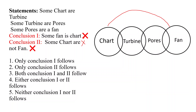Both conclusions are wrong because chart and fan have no direct relation. The first condition is satisfied for either or. The second condition: elements are fan and chart in conclusion one, and chart and fan in conclusion two — elements are the same. For the complementary pair, in conclusion one 'some' is present and in conclusion two 'some not' is present — some plus some not is our complementary pair. So this question is also eligible for either or, and the answer is either conclusion one or two follows.